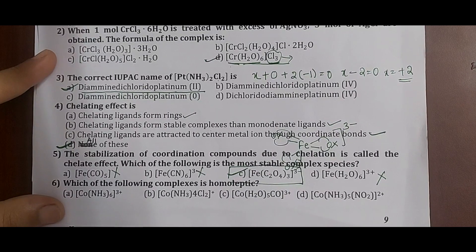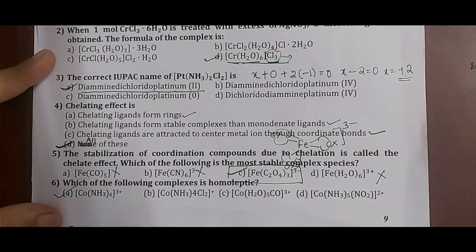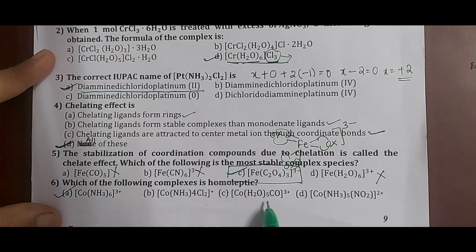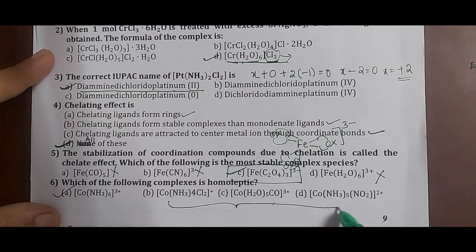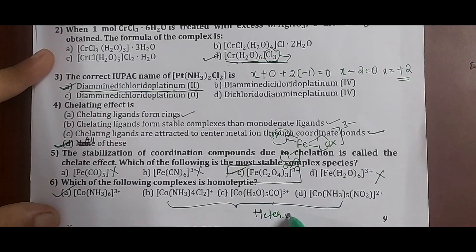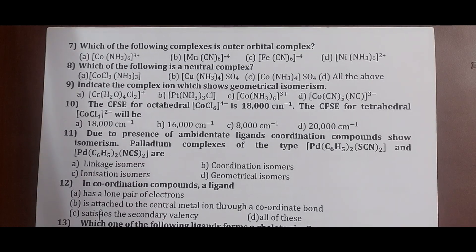Question 6: which complex is homoleptic? Homoleptic means having the same type of ligand. Option A has only ammonia as ligand — it is homoleptic. Option B has both ammonia and chlorido — heteroleptic. Option C has water and carbon monoxide — heteroleptic. Option D has ammonia and nitrito — heteroleptic. The correct answer is option A.